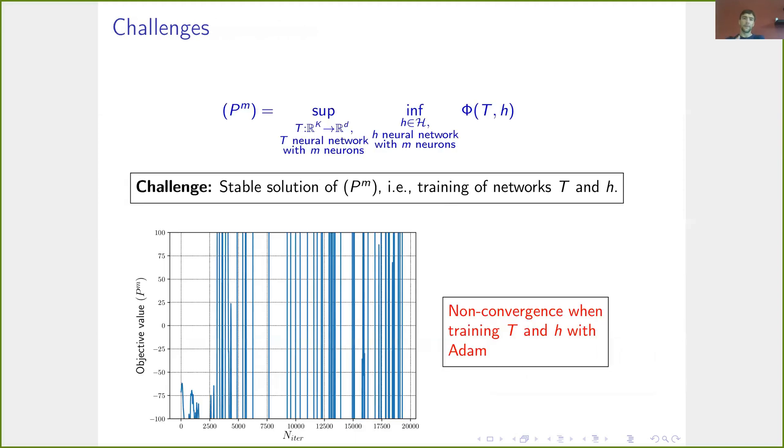Now, having this reformulation is nice because we have just finitely many parameters that you have to find or optimize for, but of course it's a non-concave optimization problem which is still very difficult to solve. And just trying to solve this directly using alternating gradient descent-type methods just doesn't work.